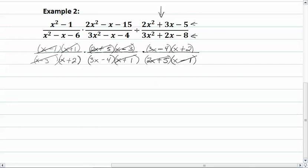x minus 3, 3x minus 4, and x plus 2. When everything simplifies out, and you have nothing left, everything was common factors between the top and bottom, that means that your answer equals 1.